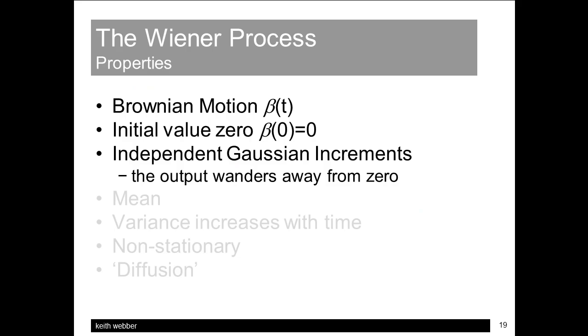So this process wanders away further from its zero starting point as time goes on. Now another of the many gotchas in continuous white noise processes is that the expected value or mean of the process is, however, still zero.